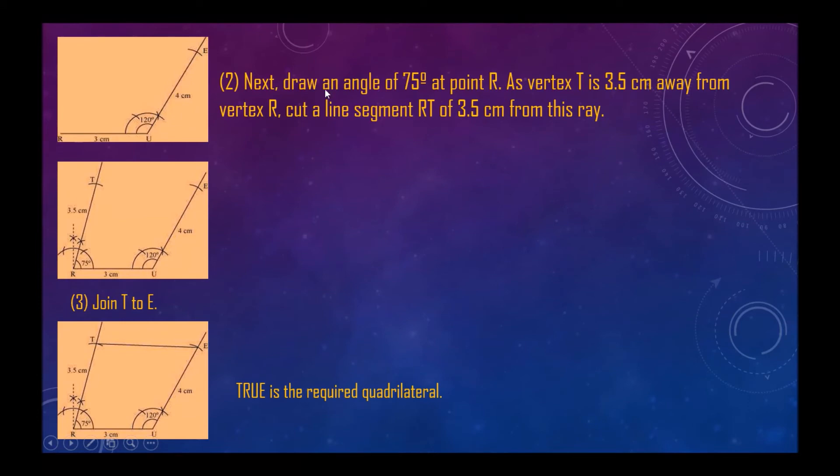Next, draw an angle of 75 degree at point R. As vertex T is 3.5 centimeter away from vertex R, cut a line segment RT of 3.5 centimeter from this ray. So RT we have cut of 3.5 centimeter.